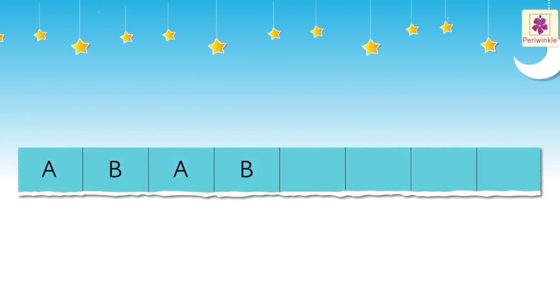Kids, we can find patterns in letters too. Now observe the given pattern and write the next four letters. We can see letter A and letter B are placed alternately. This becomes a pattern, so the next letter will be letter A, then letter B, then again letter A, and lastly letter B.